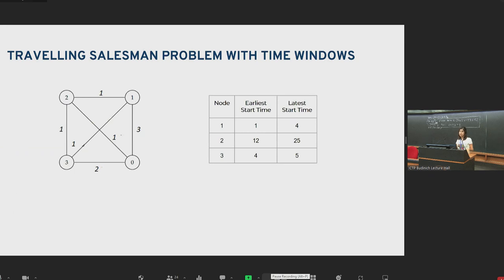Let me demonstrate this through an example. Here we are given a graph with four nodes. On the right-hand side, you'll see the earliest start time and latest start time for each city. So this is a time window. And this route you see right now, which starts at zero, goes to three, one, two, has cost of five.